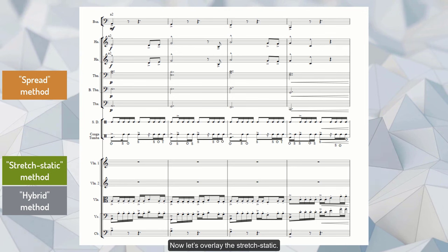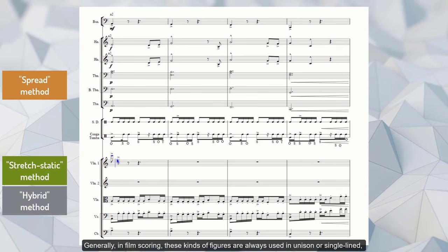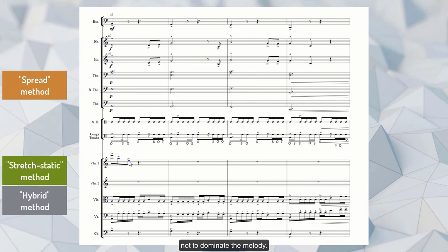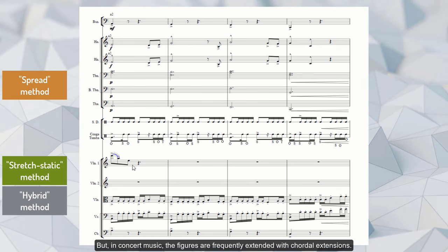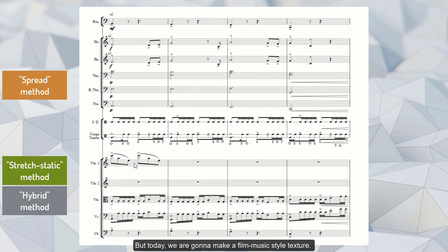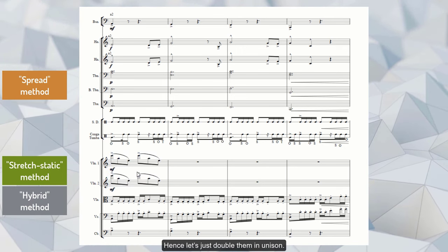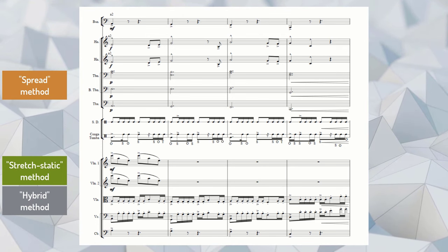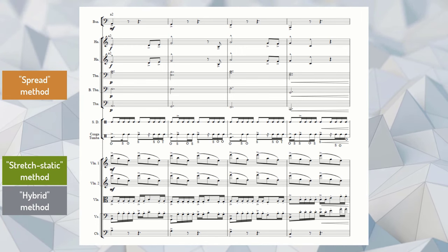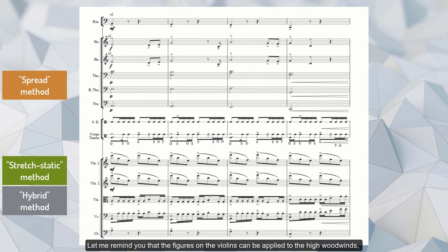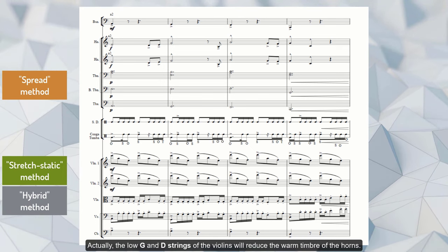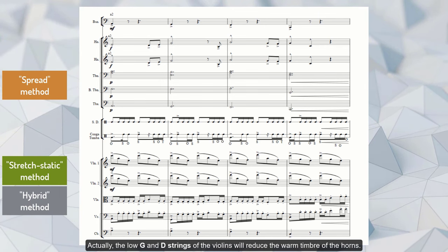Now let's overlay the stretch static. Generally, in film scoring, these kinds of figures are always used in unison or single-lined, not to dominate the melody. But in concert music, the figures are frequently extended with chordal extensions. It can be open part writing or close. But today we are gonna make a film music style texture, hence let's just double them in unison. Let me remind you that the figures on the violins can be applied to the high woodwinds, while the violins will be doubled with the horns. Actually, the low G and D strings of the violins will reduce the warm timbre of the horns.